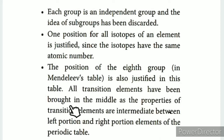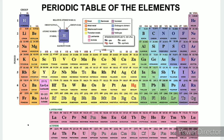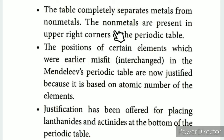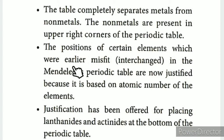All transition elements have been brought to the middle as the properties of transition elements are intermediate between the left portion and the right portion of the periodic table. In groups 3 to 12, the transition elements are placed. The table completely separates metals from non-metals. The non-metals are present in the upper right corner of the periodic table.